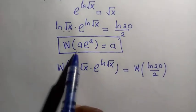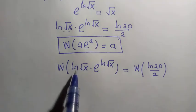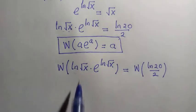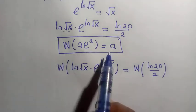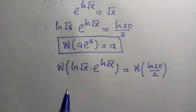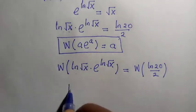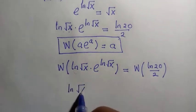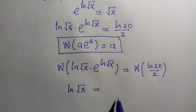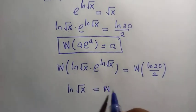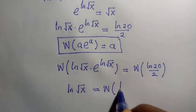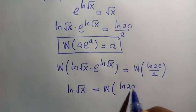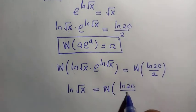So this is what we get. Then when we compare it with this, it means that we are taking only ln root x according to this formula, which is constant. So therefore we take ln root x equals the omega of ln 20 divided by 2.